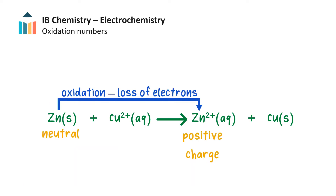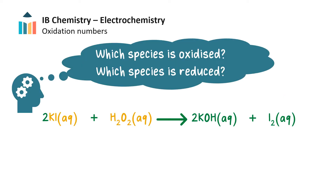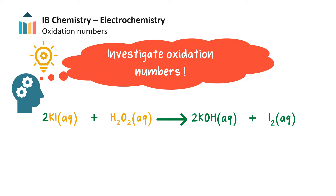In our redox reaction example, we deduced that zinc lost electrons and was oxidized since it went from a neutral state to a positive charge. We also deduced that copper gained electrons and was reduced since its charge went from a +2 state to a neutral state. In some redox reactions, deciding which species is oxidized and which is reduced is more challenging. We must therefore identify the oxidation state or oxidation number of each element in each species and investigate how these values change during the reaction to identify which species is reduced and which is oxidized.